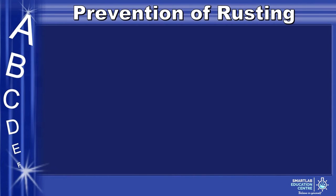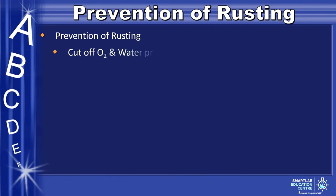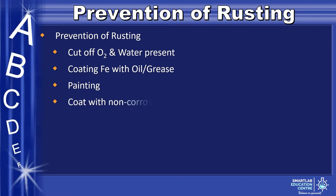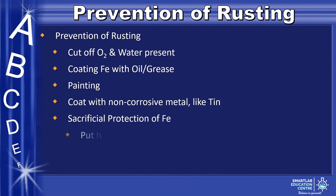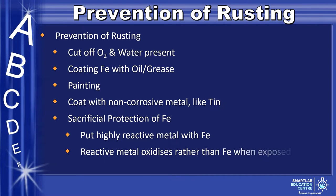In order to prevent rusting, we need to cut off oxygen and water present, or coat iron with oil or grease, paint over it, or coat it with a non-corrosive metal like tin. Another way is sacrificial protection of iron, where we put a highly reactive metal with iron — the reactive metal oxidizes rather than iron when exposed to oxygen and water.